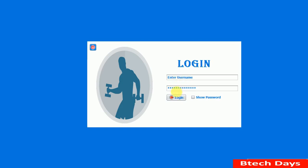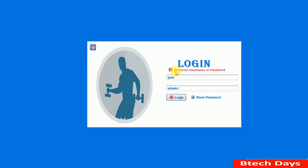I set the username to 'GMS' — Gym Management System — and the password is 'admin'. If you want to see the password, click the 'Show Password' checkbox. First, we'll enter an incorrect password and try to log in. Clicking login shows a pop-up message: 'Incorrect username or password.' When we change the fields, you can see the message gets removed automatically, and when we try to log in again, the message pops up again.